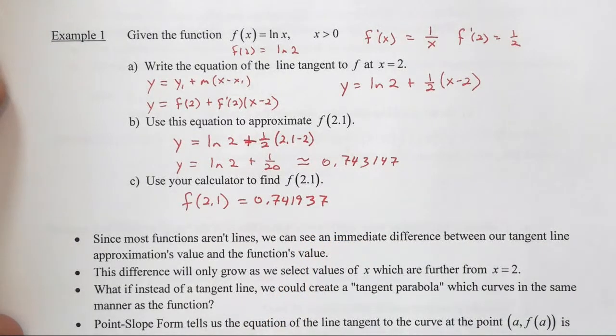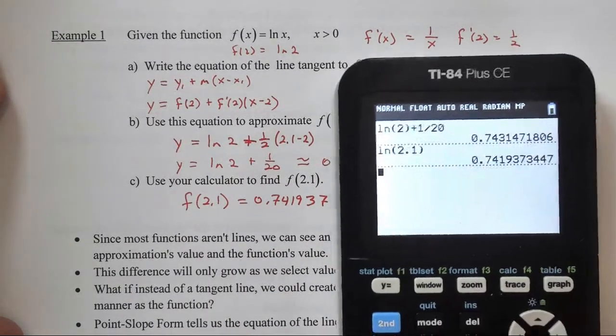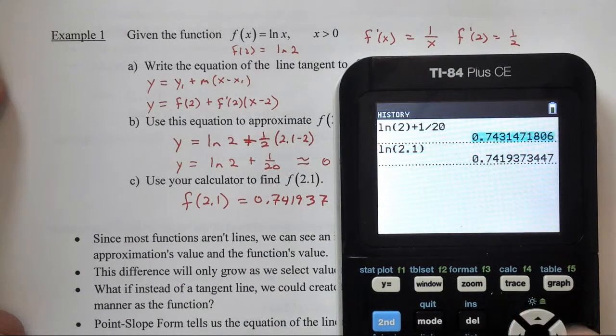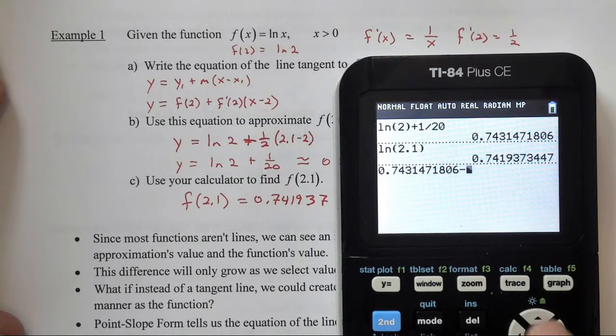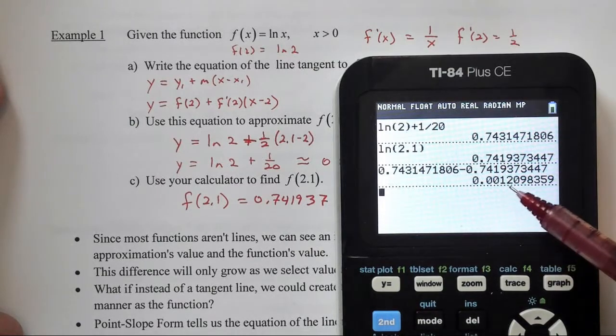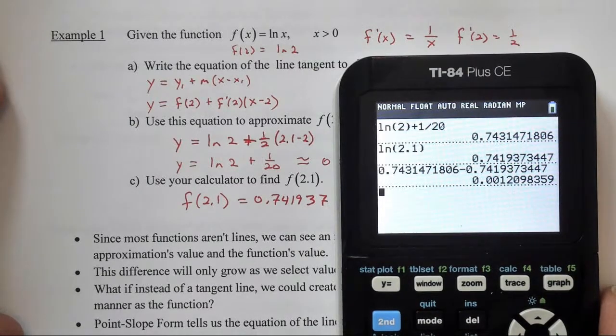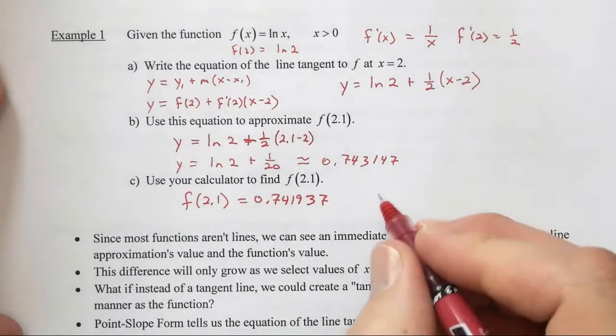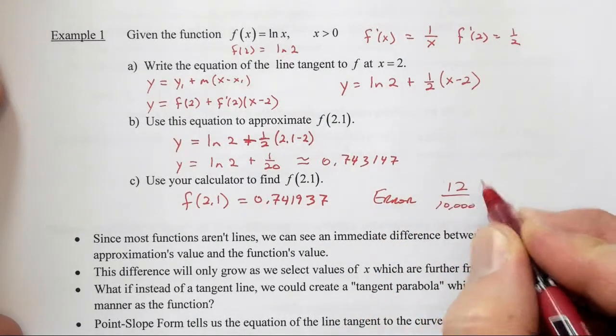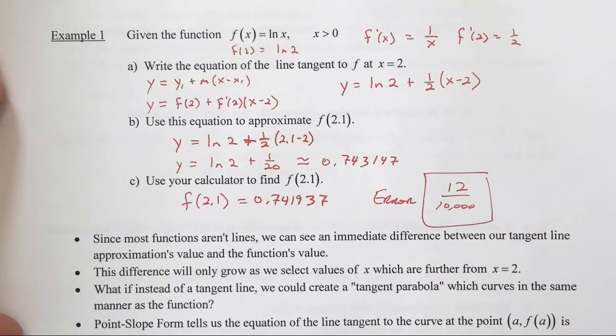Doing some quick subtraction here, we see that we're pretty close to what's going on. We have that answer, and we're going to subtract this for a difference of basically ten thousandths. That's our error, which is not that large.